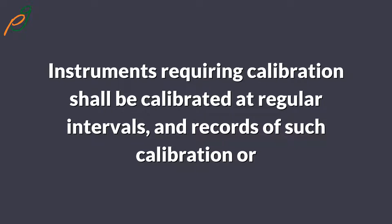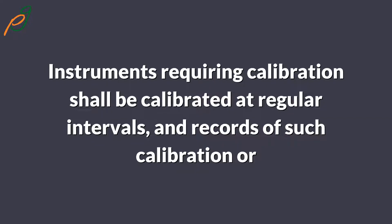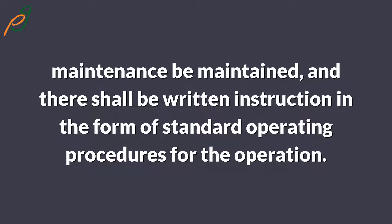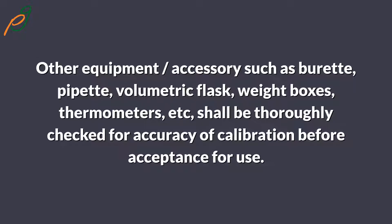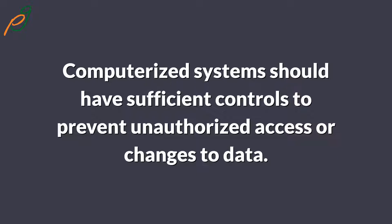Instruments requiring calibration shall be calibrated at regular intervals and records of such calibration or maintenance shall be maintained. There shall be written instructions in the form of standard operating procedures for the operation of equipment. Other accessories such as burettes, pipettes, volumetric flasks, weight boxes, thermometers, etc., shall be thoroughly checked for accuracy of calibration before acceptance for use. Computerized systems should have sufficient controls to prevent unauthorized access or changes to data.